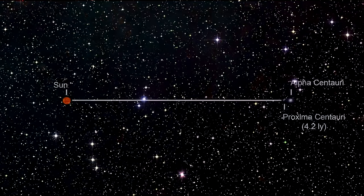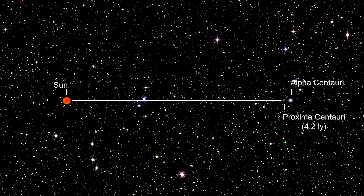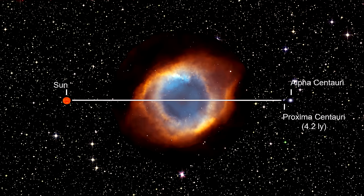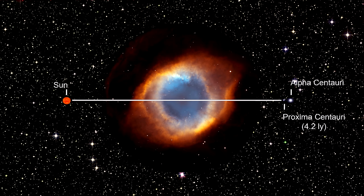Based on the nebula's distance of 650 light-years, triangulating its angular size corresponds to a huge ring with a diameter of nearly three light-years. It would fill most of the space between our Sun and our nearest star, Proxima Centauri.